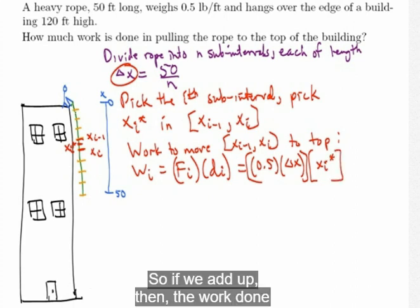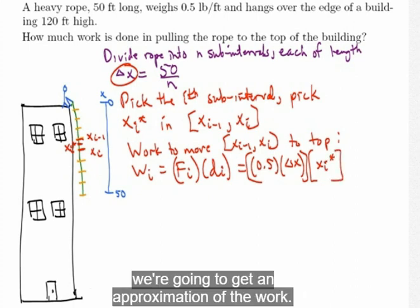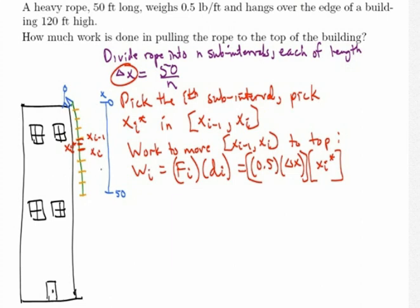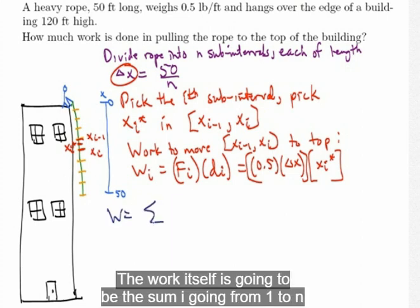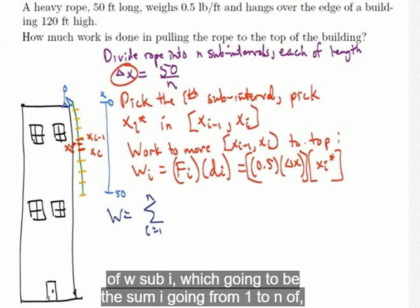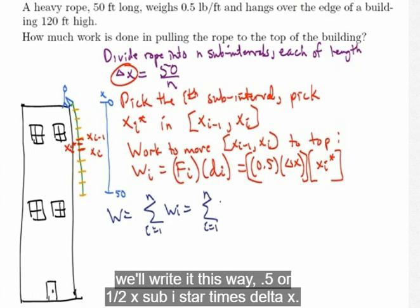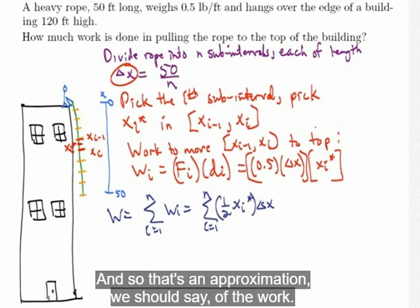So if we add up, then, the work done for moving all those sections, we're going to get an approximation of the work. The work itself is going to be the sum, i going from 1 to n, of w sub i, which is going to be the sum, i going from 1 to n, of one-half x sub i star times delta x. And so that's an approximation, we should say, of the work.